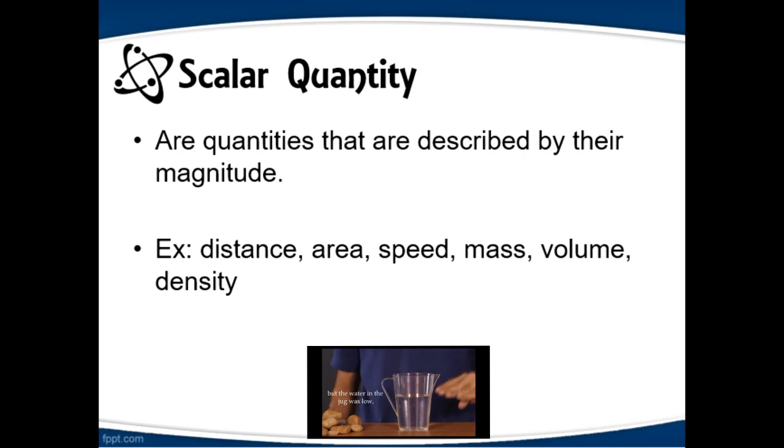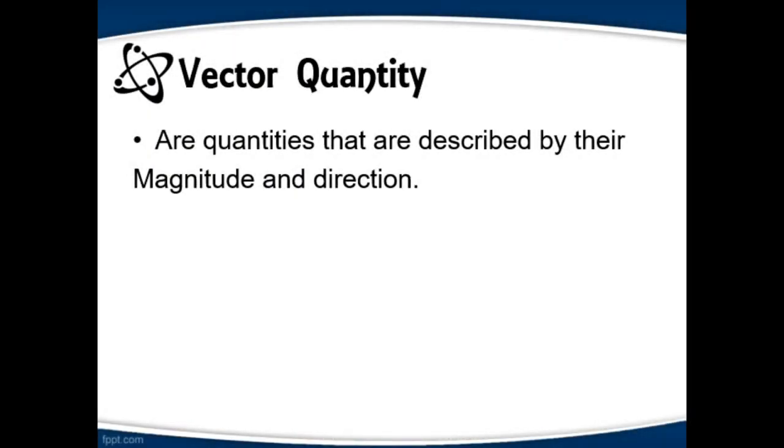Now, let's see the other type of quantity to determine the difference between those two. The other quantity is vector quantity. These are quantities that are described by their magnitude and direction.